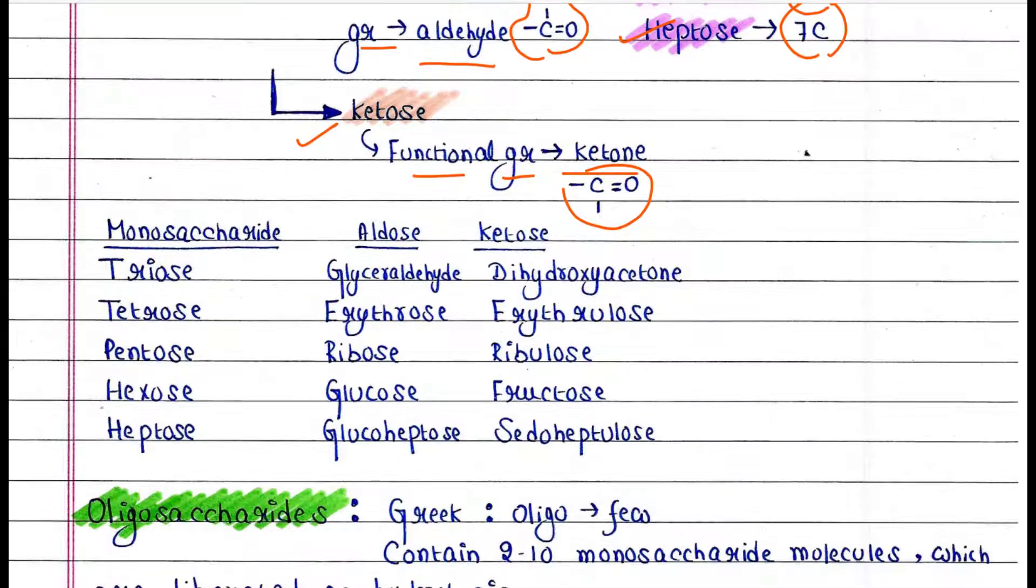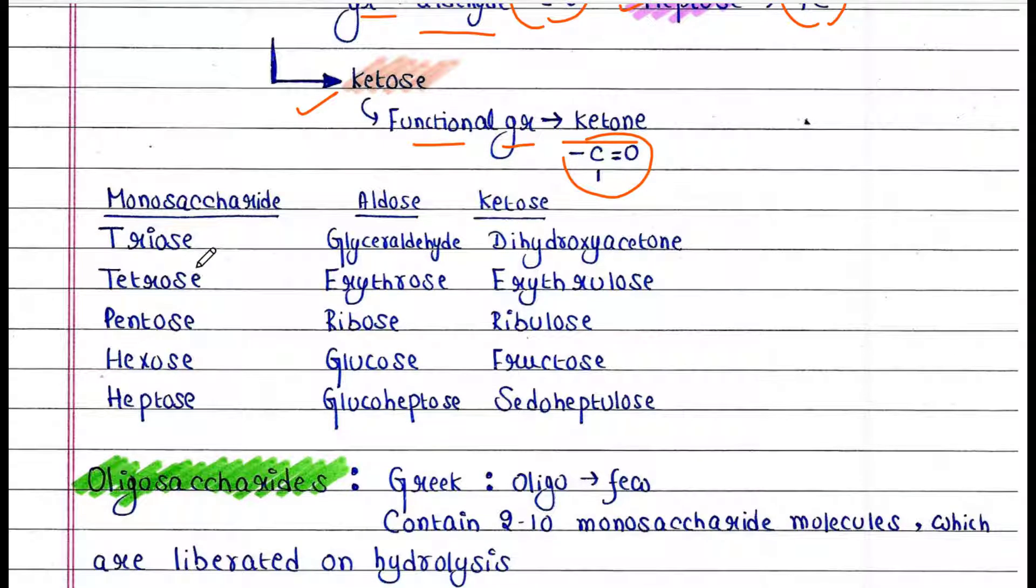Now here we can see a list. So when it is triose, the aldose would be named glyceraldehyde. The ketose would be named dihydroxyacetone. That means in glyceraldehyde you have the functional group CHO and it has three carbons. In dihydroxyacetone the functional group is CO and it has three carbons. In tetrose the aldose would be erythrose. When it is pentose, the aldose would be named ribose and the ketose would be named ribulose.